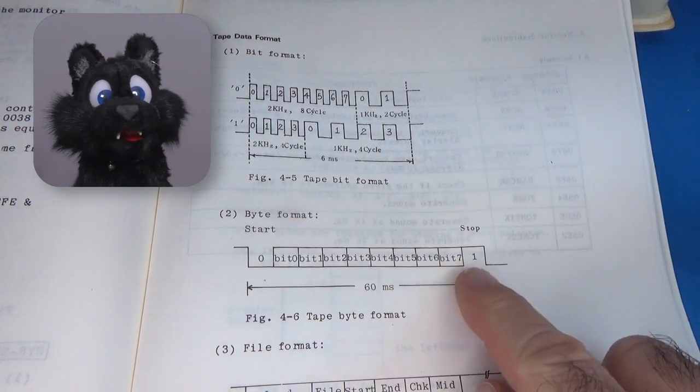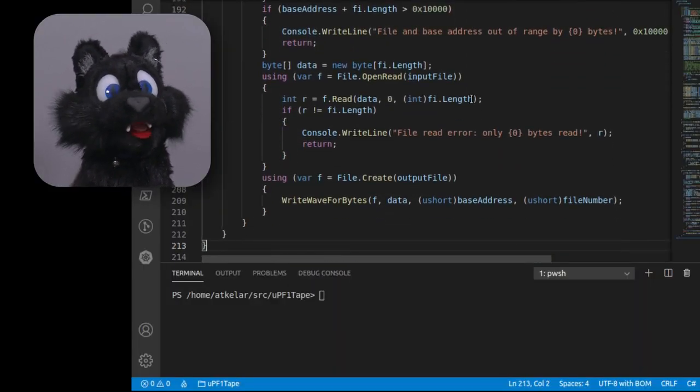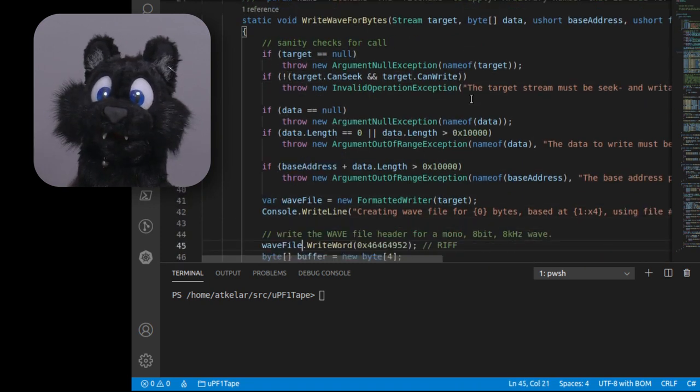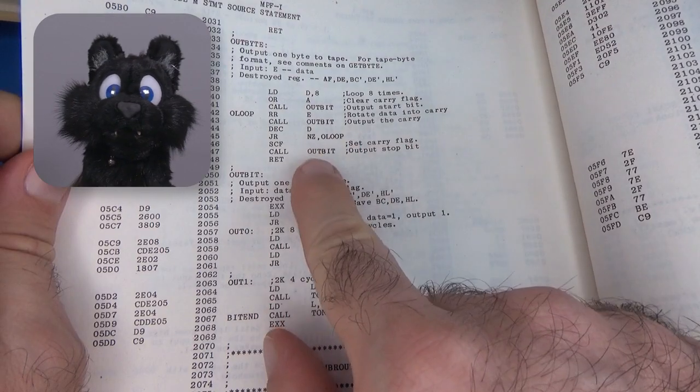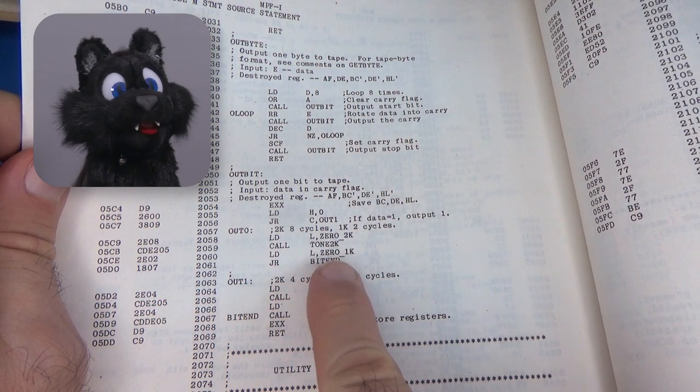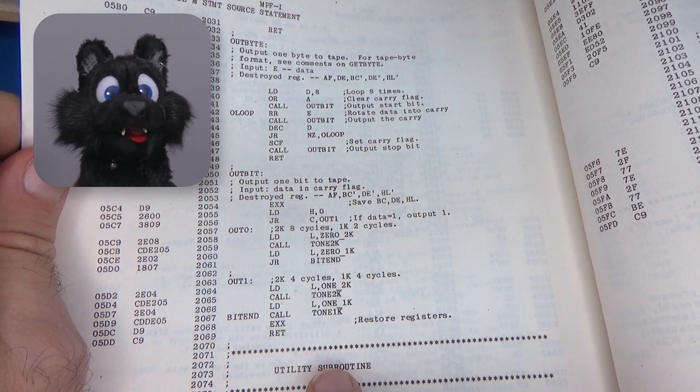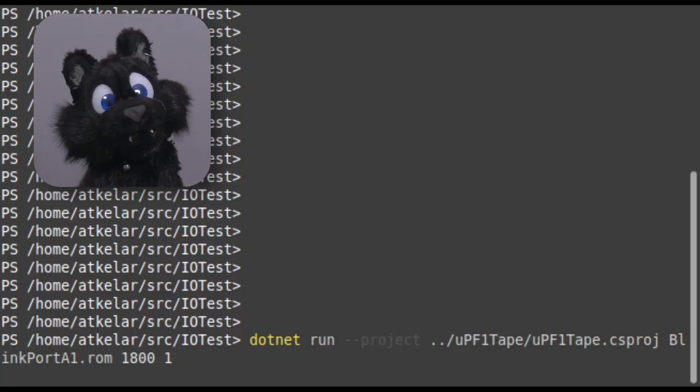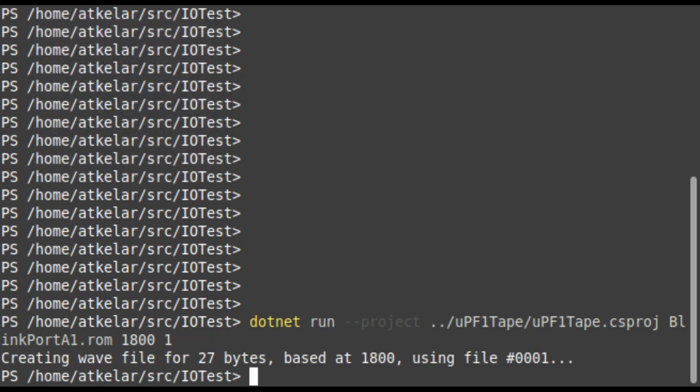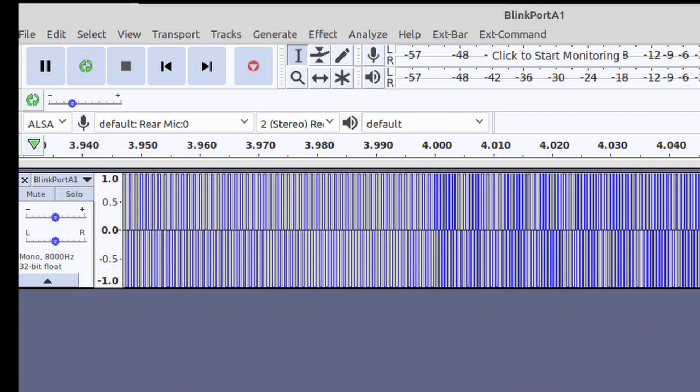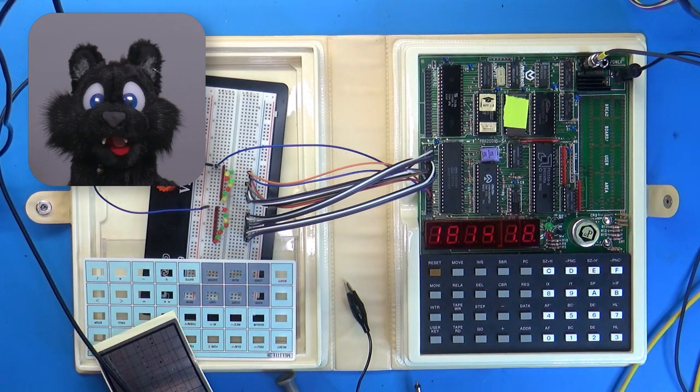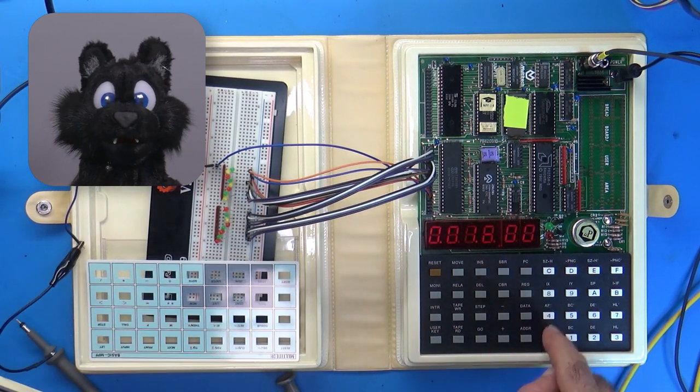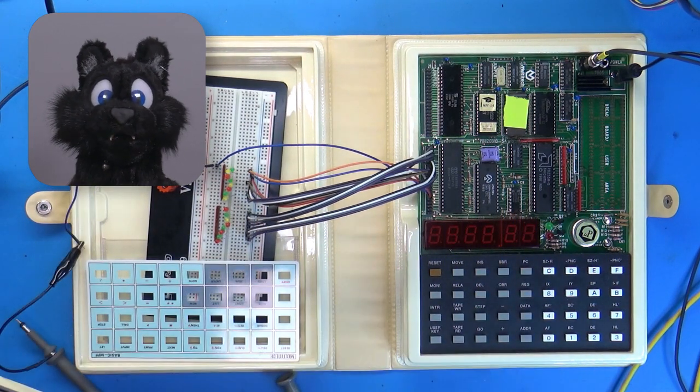Let's read up on the format of the tape audio and create a program on my PC that turns the binary file into a WAV file. The MPF1 also comes with the complete monitor source code for your convenience. And here we go! Loading my Blinky program back into the board and running it. Nice!